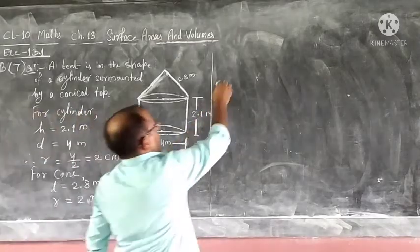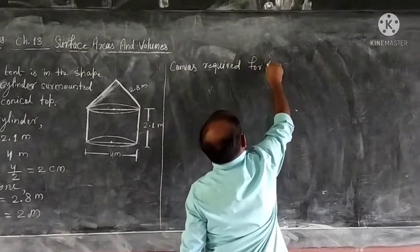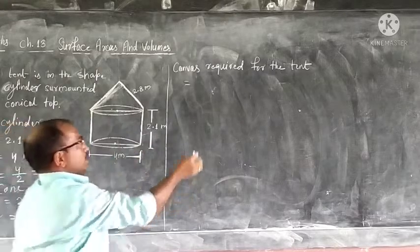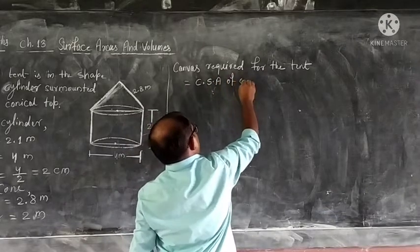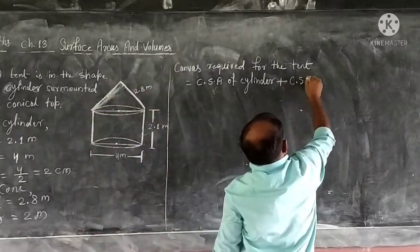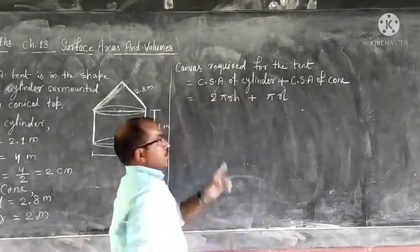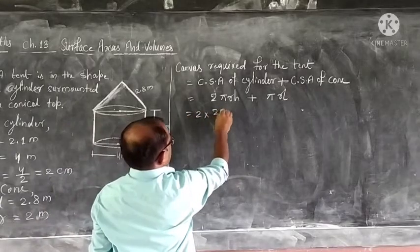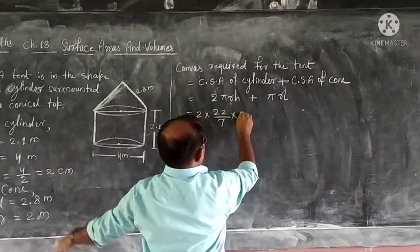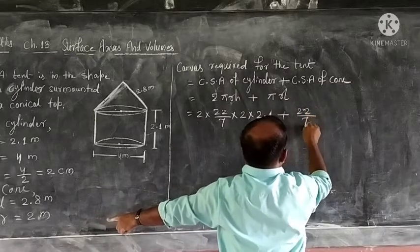We need the curved surface area of the cone, for which slant height L is needed, and radius is also needed. The radius of the cone will be the same as the radius of the cylinder, which is 2 meters. Canvas required for the tent equals curved surface area of cylinder plus curved surface area of cone — that is 2πrh + πrl. Using π = 22/7, radius 2, height 2.1 for cylinder.